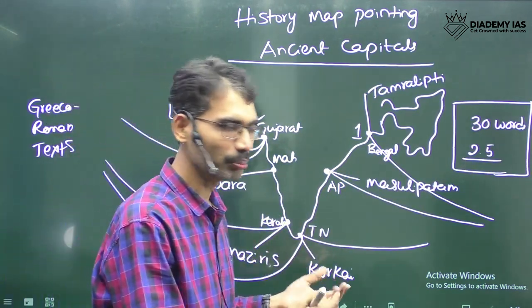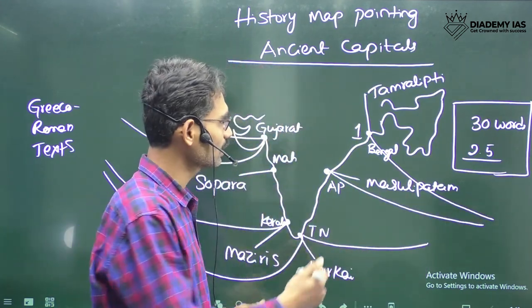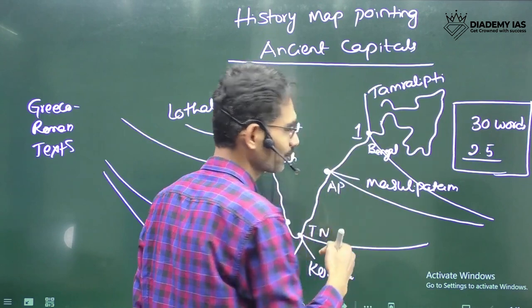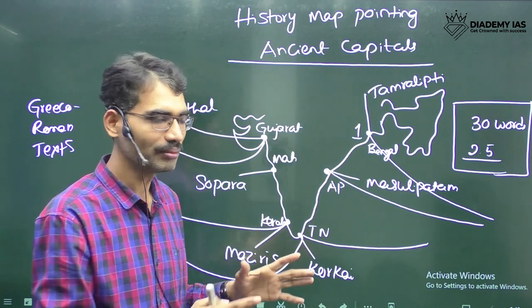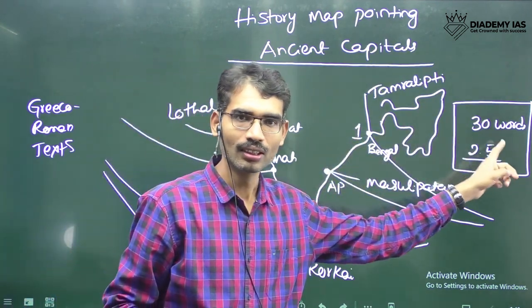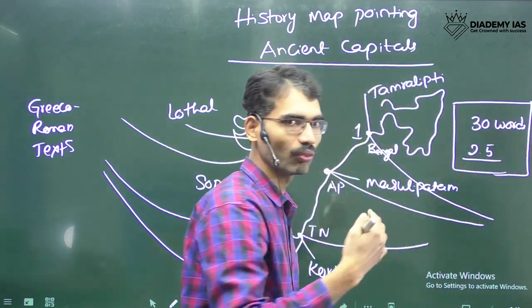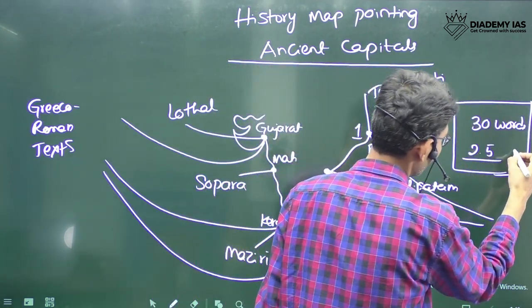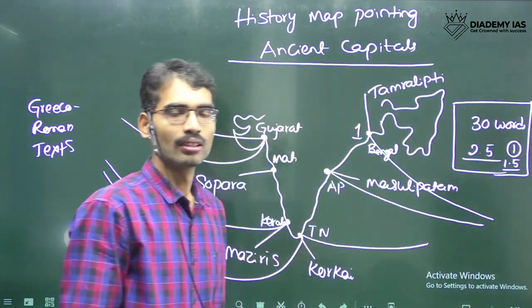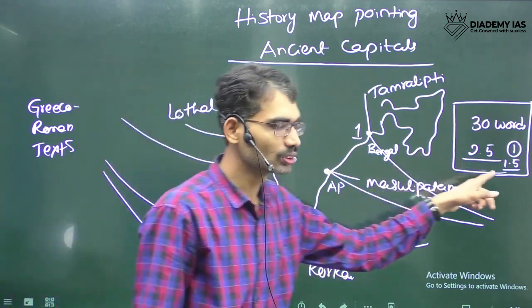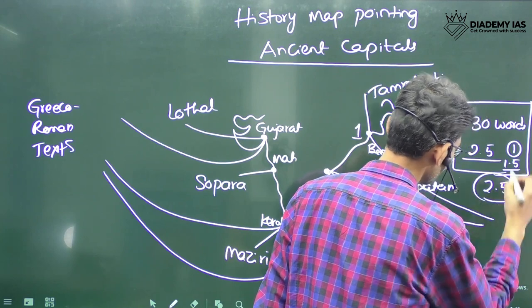Once you identify the geographic location of the present-day state and the important ancient ports of that time, you can easily answer. If you identify correctly, you will get one mark. If you also write 30 words of content, you will get 1.5 marks. So out of 2.5, you can easily get 2.5.